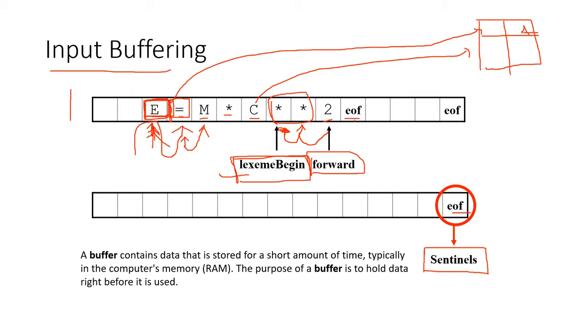After the same process goes on for 2, we get to the EOF. Once we get to the EOF, the input buffer is now completely scanned. This EOF is just for reference that this is the last box up to which we can enter values, but for us it ends here. When EOF is encountered by the lexeme begin or forward pointer, we get to know that this line has been completely analyzed, so send the next line. That's all for input buffering.